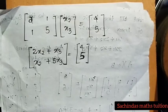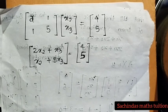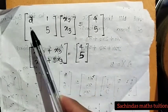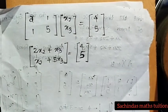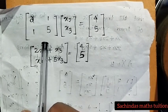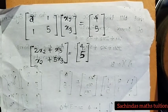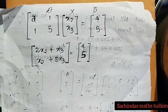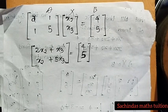This is the submatrix. We identify the second column and the third column. Now we have 3 submatrix cases to solve, setting non-basic variables to zero.